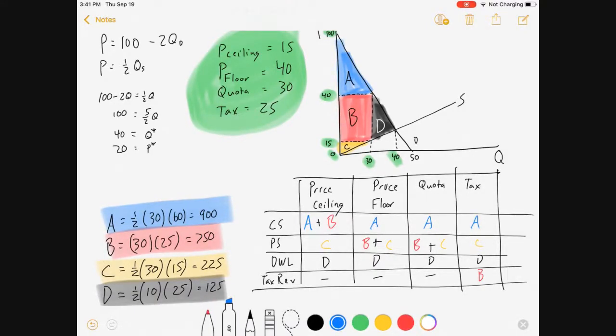So kind of a big picture here. A is constant. A is always in consumer surplus. C is constant. C is always in producer surplus. D is constant. D is always deadweight loss. The only thing that's really changing here is B. B moves depending on our policy. If we push prices down, B goes to the consumers. If we push prices up or limit quantity, B goes to the producers. If we tax, the government takes B for itself.